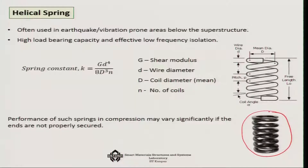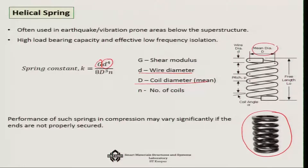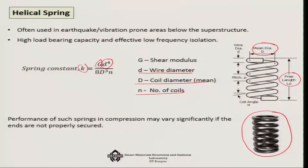If you look at the spring constant K, it depends on the shear modulus of the material and the wire diameter — very significantly, as d to the power 4. It also inversely varies with the mean coil diameter D. Additionally, the number of coils and the free length factor in, so once you know these parameters you can find out the spring stiffness K.